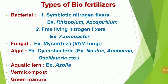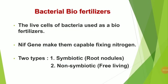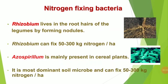In bacterial biofertilizers, the live cells of bacteria are used. The nif gene present in the bacteria makes them capable of fixing nitrogen. There are two types: symbiotic nitrogen fixers and non-symbiotic nitrogen fixers. A key example of nitrogen-fixing bacteria is Rhizobium, which lives in the root hairs of legumes by forming nodules. Rhizobium can fix 50 to 300 kg of nitrogen per hectare.